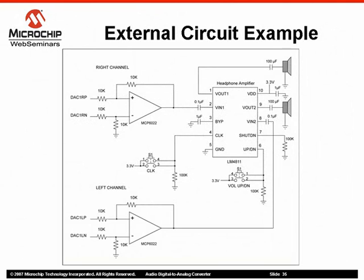This circuit shows a typical configuration for connecting speakers to the DAC module. This example uses the differential outputs of the DAC and produces a single-ended output using op-amp based amplifiers. The corresponding output is two times the positive input.